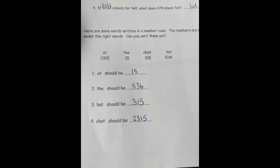So the answers. At will be one five. The, five three four. Hat, three one five. And chat, two three one five. If you've got all of the first page correct, award yourself a house point.